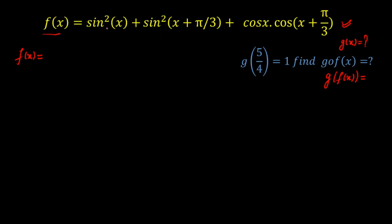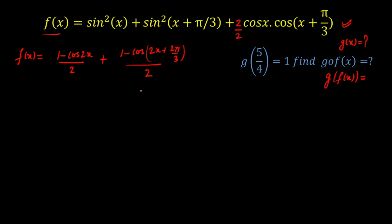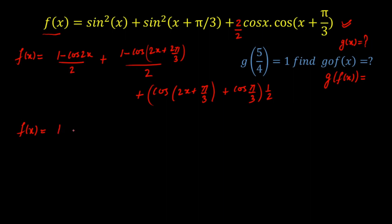I'll reduce the power and convert everything into cosine. Using the formula sin²(x) = (1 − cos 2x)/2, and similarly sin²(x + π/3) = (1 − cos(2x + 2π/3))/2. For the product cos(x)·cos(x + π/3), I multiply and divide by 2 to apply the cos C + cos D formula, getting cos(2x + π/3) + cos(π/3), multiplied by 1/2.